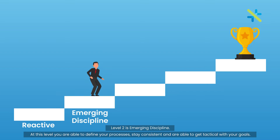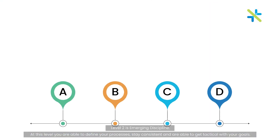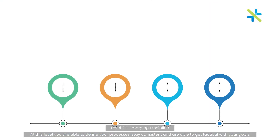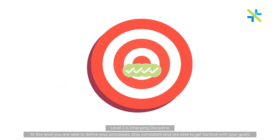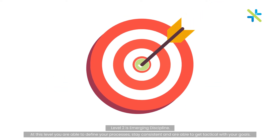Level 2 is emerging discipline. At this level you are able to define your processes, stay consistent, and are able to get tactical with your goals.